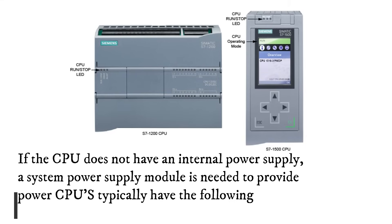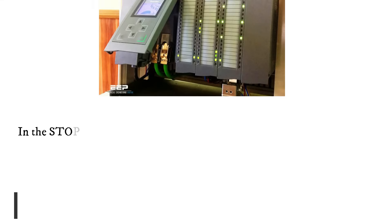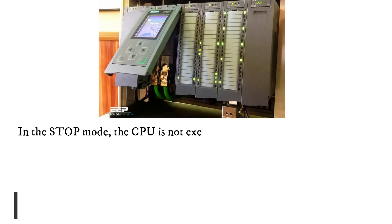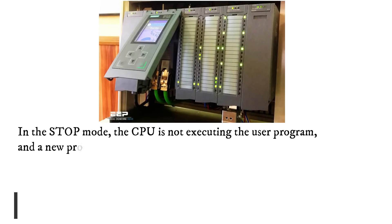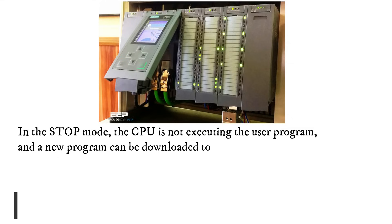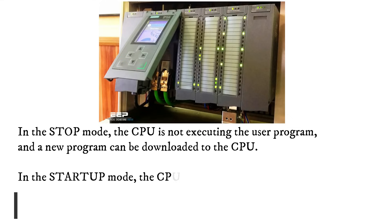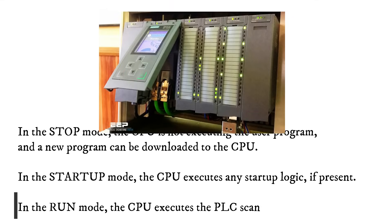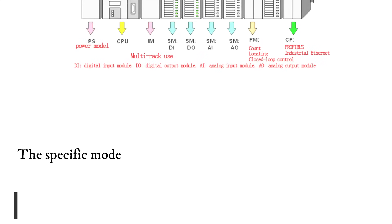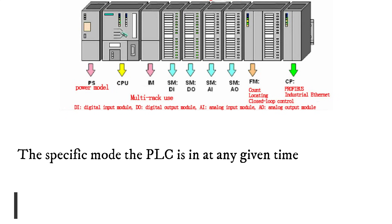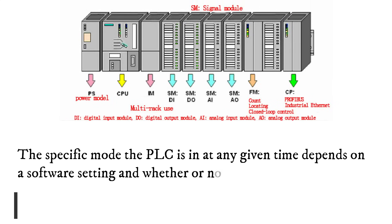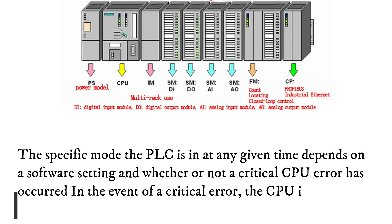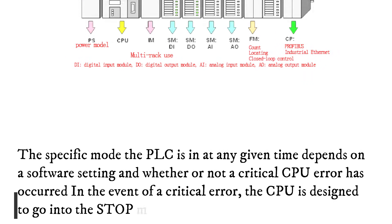CPUs typically have the following three operating modes. In the stop mode, the CPU is not executing the user program, and a new program can be downloaded to the CPU. In the startup mode, the CPU executes any startup logic, if present. In the run mode, the CPU executes the PLC scan repeatedly. The specific mode the PLC is in at any given time depends on a software setting and whether or not a critical CPU error has occurred. In the event of a critical error, the CPU is designed to go into the stop mode.